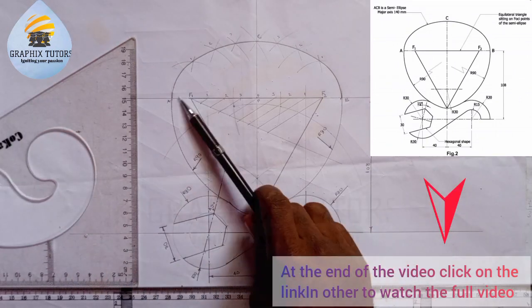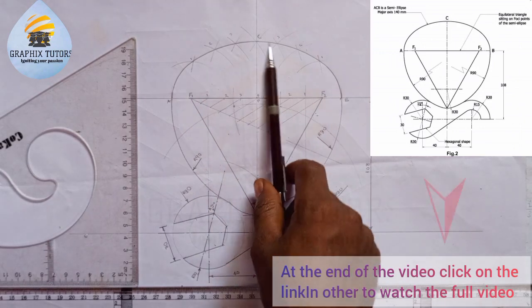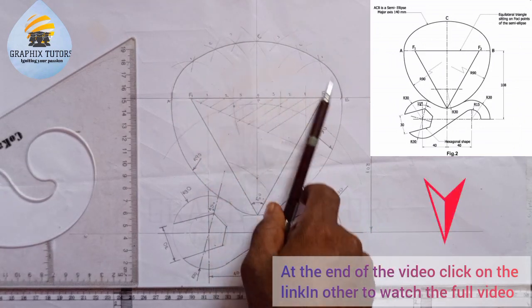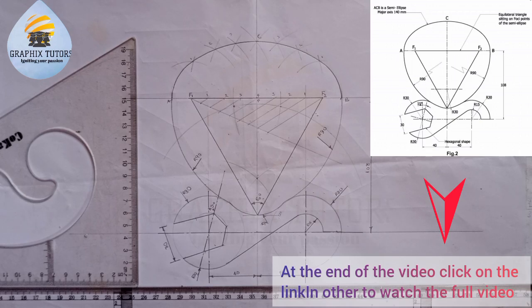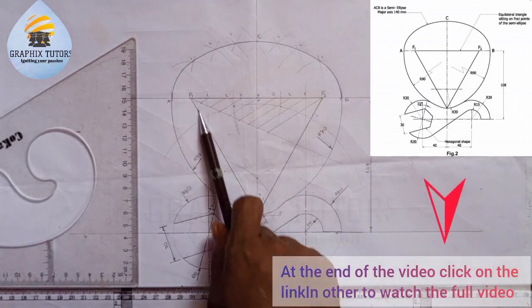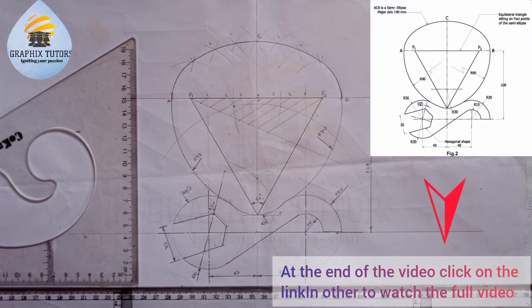In order to get this elliptical arc that we have here, a semi-elliptical arc, and also using your knowledge in geometrical construction in order to get this triangle that is displayed here. Now what I have done here is show you the analysis of this logo.